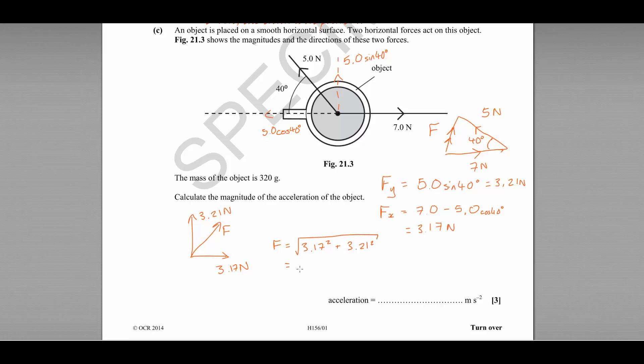Now the question wants us to find the acceleration, so for that we can use F equals ma, or a equals F divided by m, where F is 4.51.